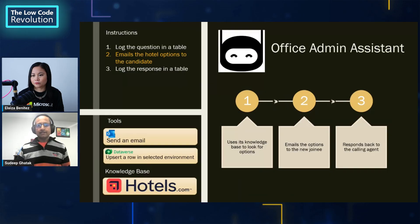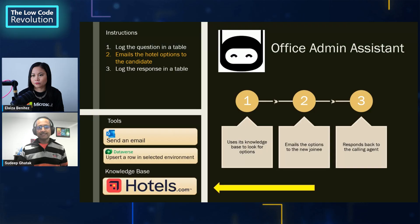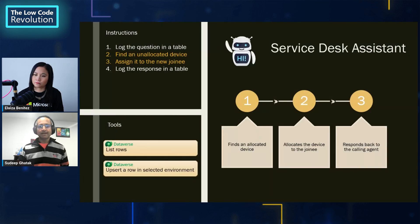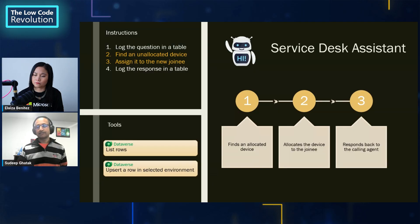The third agent handles hotel availability. It has access to a knowledge base to do its job and has been given a send email tool, enabling it to send emails to the applicant. The final agent is the service desk agent. It looks for an unallocated device and assigns it to the new hire, using two tools: one to read data from Dataverse and the other to write data into Dataverse.